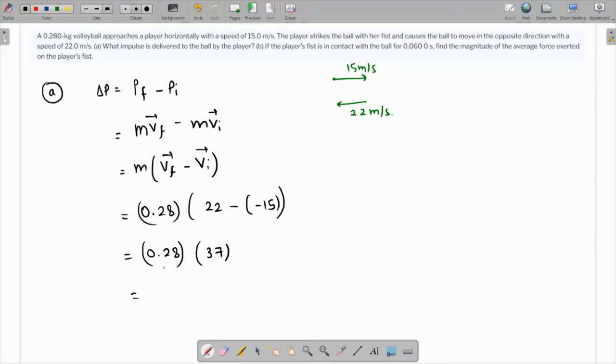Multiplying using the calculator, that comes out as 10.36 kilogram meter per second. So this is the required impulse delivered to the ball by the player. That is the answer to part a. Part b asks: if the player's fist was in contact for 0.06 seconds, what is the magnitude of the average force?